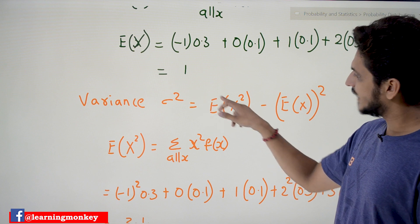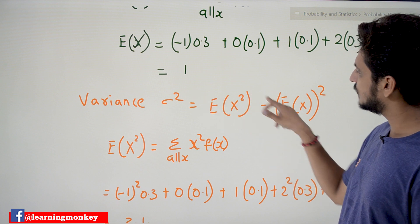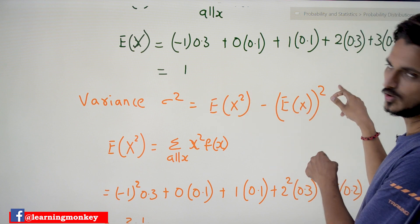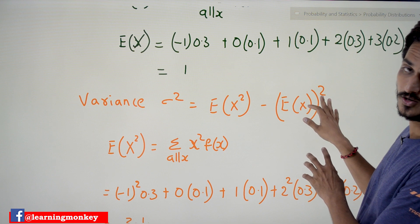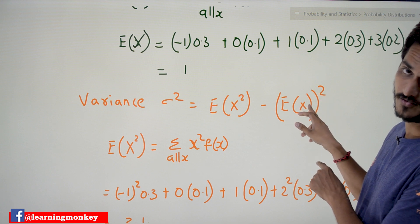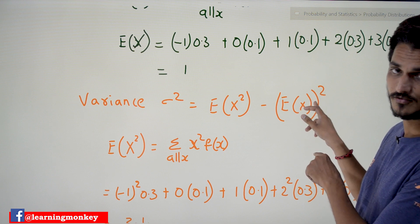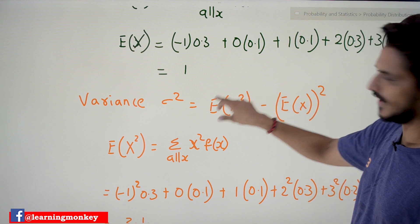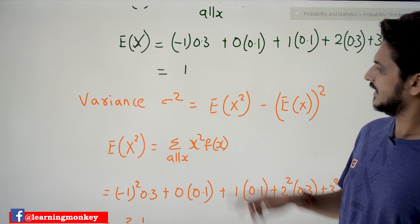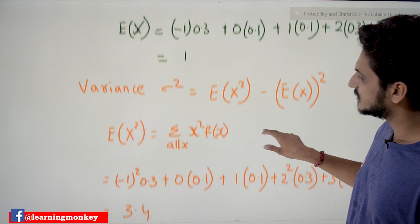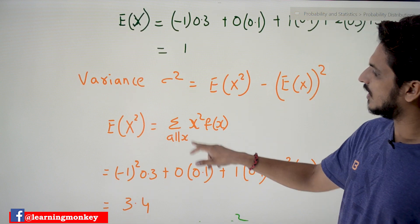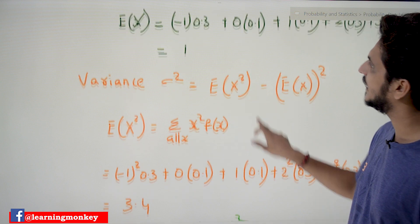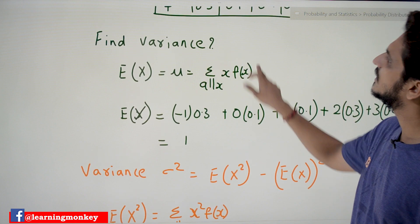After finding the expected value, we compute the variance. Variance is given as sigma squared equals E(X squared) minus [E(X)] squared. We already know E(X) equals 1, so we need to find E(X squared). E(X squared) equals the summation of all X squared times F(X).